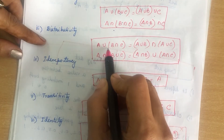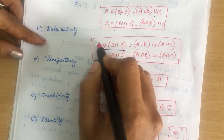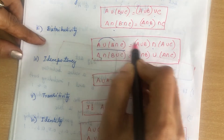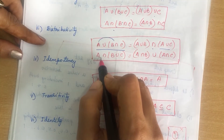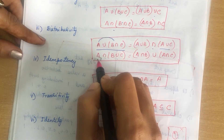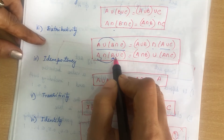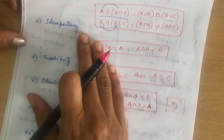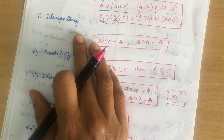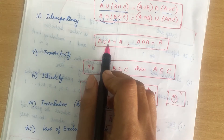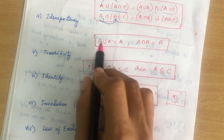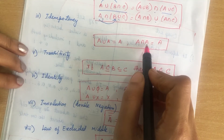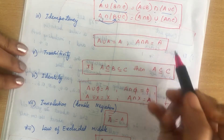Third is distributive property: A ∪ (B ∩ C) = (A ∪ B) ∩ (A ∪ C), and A ∩ (B ∪ C) = (A ∩ B) ∪ (A ∩ C). Fourth is idempotency: A ∪ A = A, and A ∩ A = A. You get the same set A when taking union or intersection with itself.